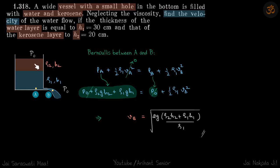We have a vessel: the top part is filled with kerosene and the bottom is filled with water. There is a hole at the bottom, and we need to find the velocity of water flow.